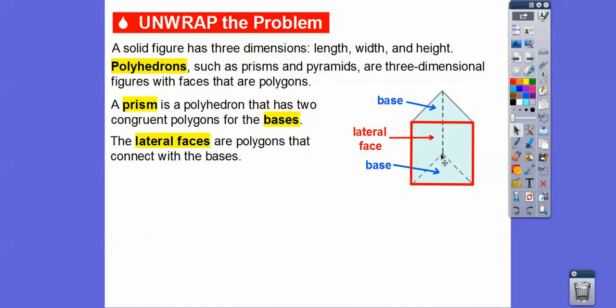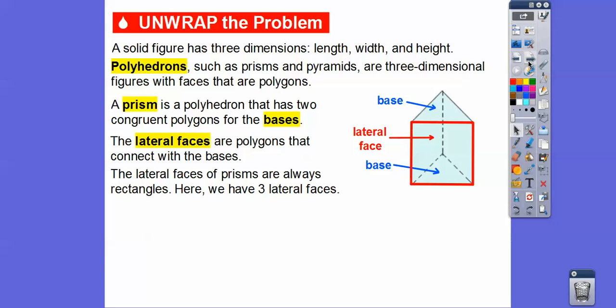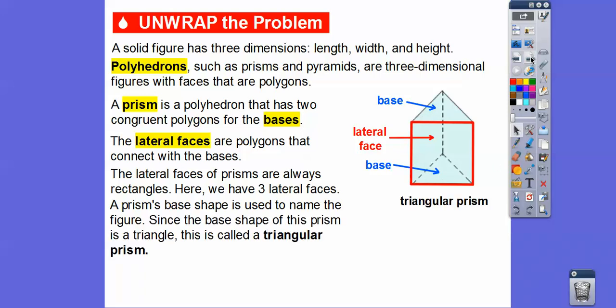There's another lateral face in the back on the left, and another rectangle right here. The lateral faces are the polygons that connect with the bases. If it's a prism, the lateral faces are always rectangles. So here we have three lateral faces: the one on the front, the one in the back, and then the one over here. A prism's base shape is used to name the figure. The bases are the top triangle and the bottom triangle, so since the base shape is a triangle, this is called a triangular prism.